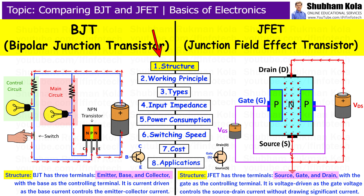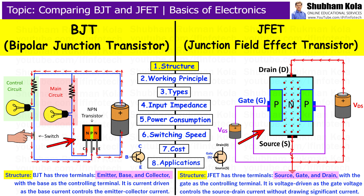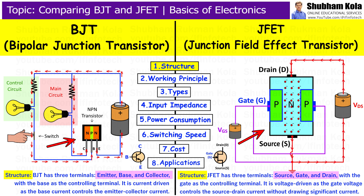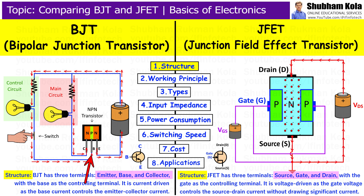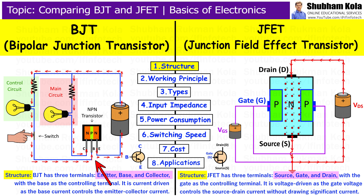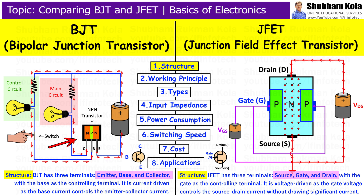First is structure. BJT and JFET are designed differently, which influences their performance and applications. BJT has three terminals: Emitter, Base, and Collector. The Base is the controlling terminal, and the current flowing into the Base controls the large current flowing between the Emitter and Collector. This makes BJT a current-driven device.